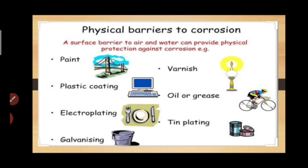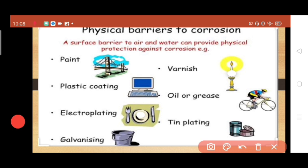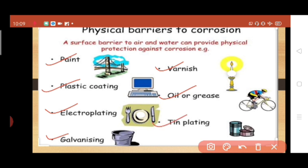Ways to prevent corrosion. The different ways to prevent corrosion are: painting, plastic coating, electroplating, galvanizing, varnishing, oil and grease, and tin plating.